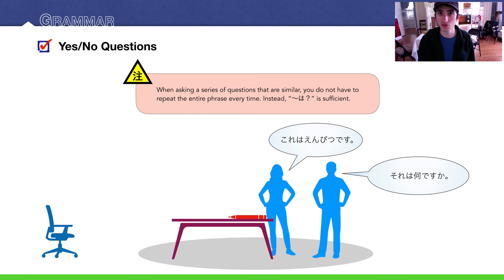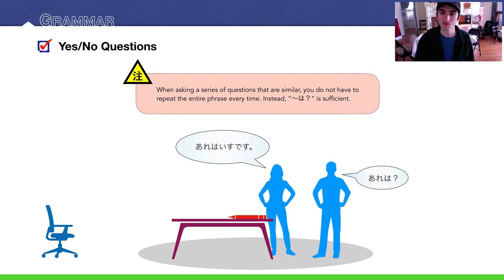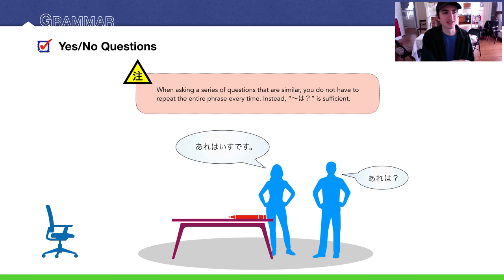When asking a series of similar questions, you don't have to repeat the entire question — just use は and a question mark. For example: he asks それは何ですか？ She replies これはえんぴつです. Then if he wants to know about a chair far away, he just says あれは？ She answers あれはいすです. You just need は and a question mark, maybe with a demonstrative noun.